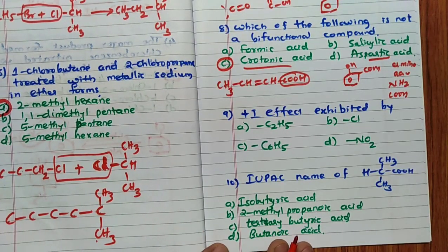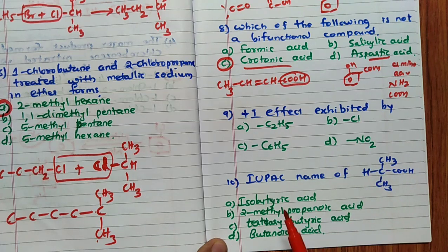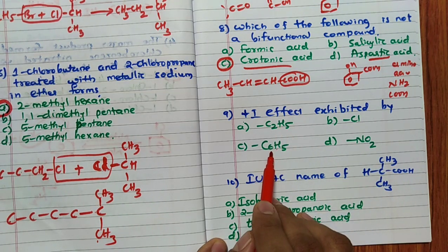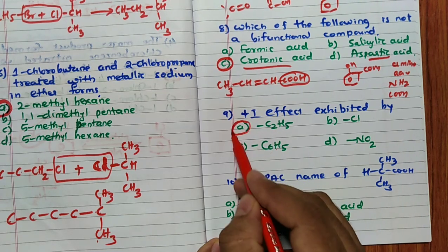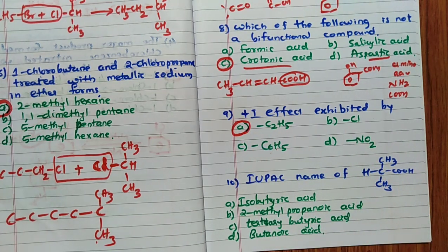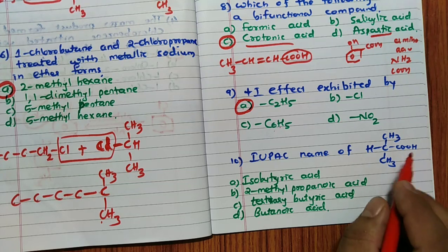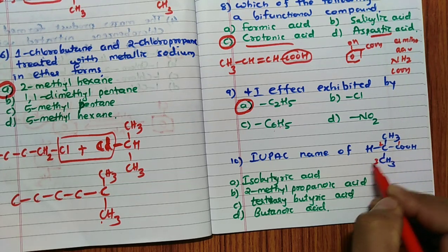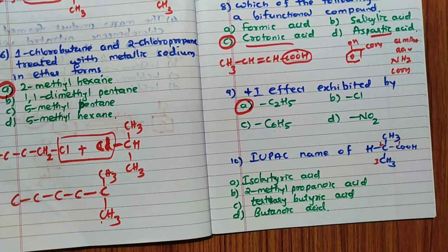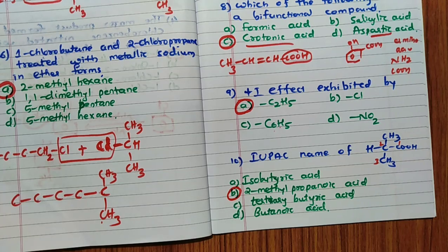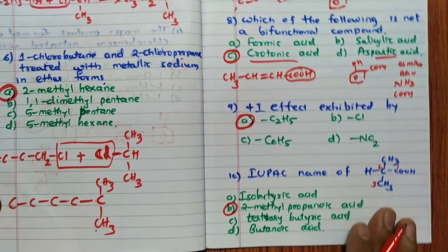Ninth question: +I effect is exhibited by alkyl groups. Aryl groups show −I effect. Among the options, C₂H₅ is an alkyl group and shows +I effect, while Cl and NO₂ show −I effect. So C₂H₅ is the answer. Tenth question: IUPAC name of the given compound — after numbering the carbon chain, the answer is 2-methylpropanoic acid.